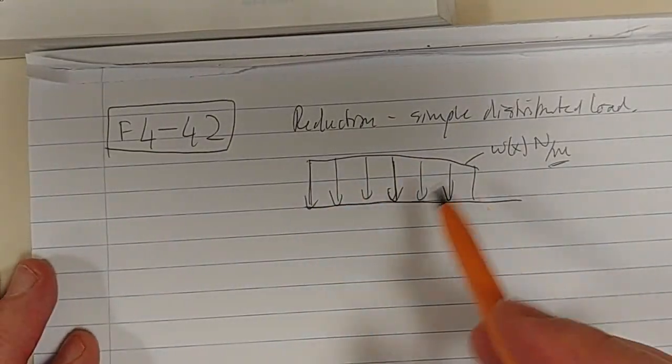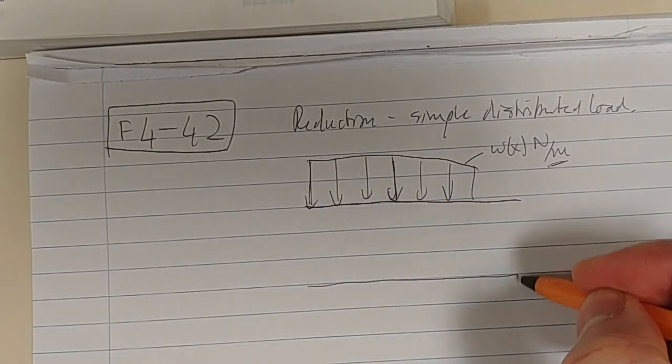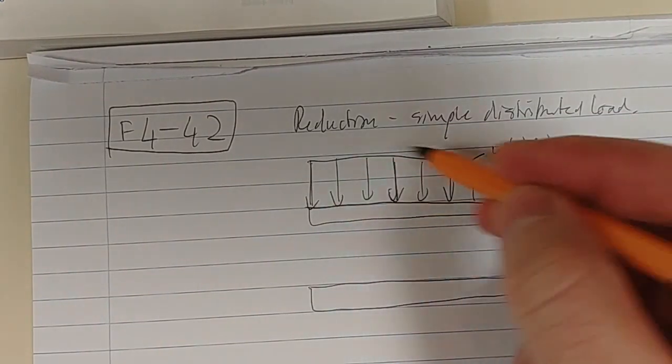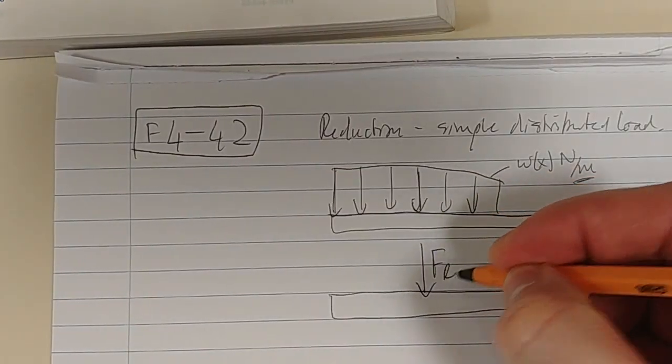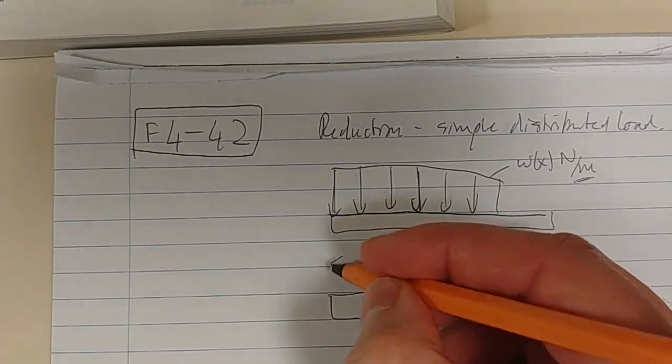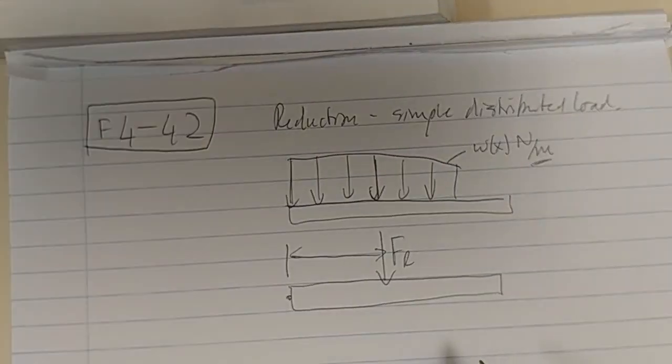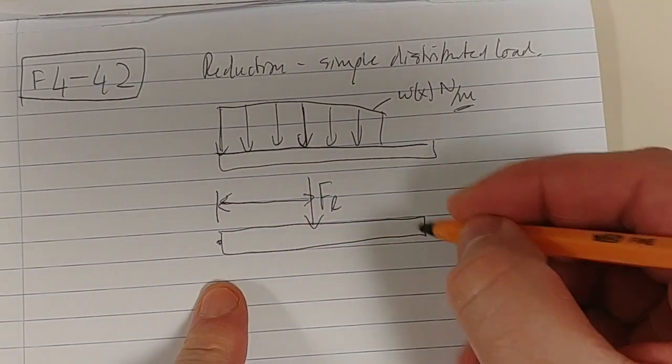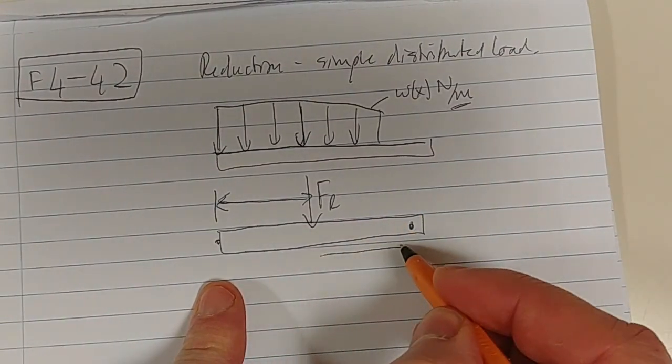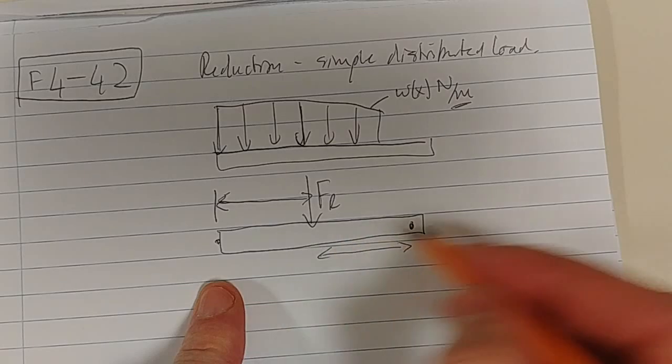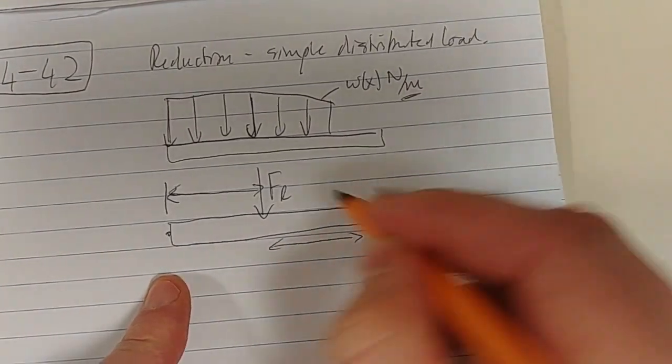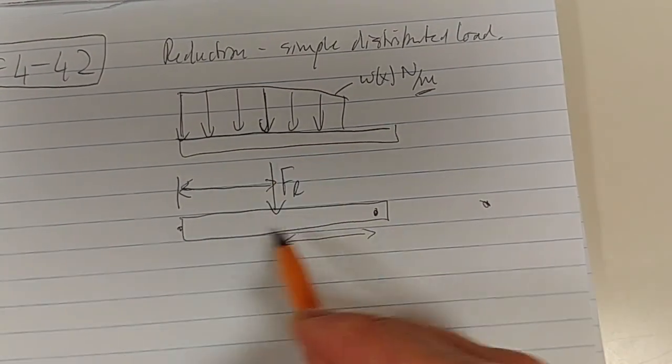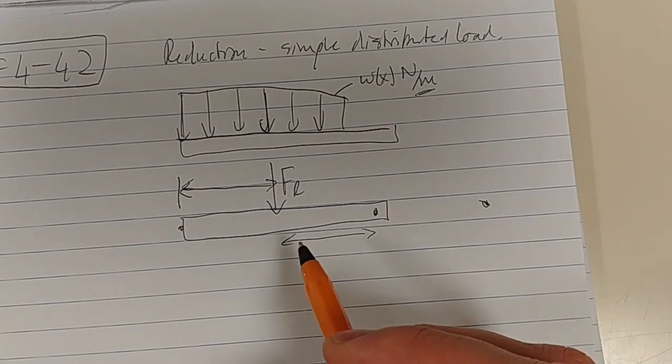So what are we trying to do here? We're trying to reduce this - there's our beam, there's the original beam - we're trying to reduce this to a single force acting at a certain distance from some arbitrary point. Just remember we can measure this distance from any point in the universe. How far is this FR measured from that point? The point is that it will end up at exactly the same spot on the beam.